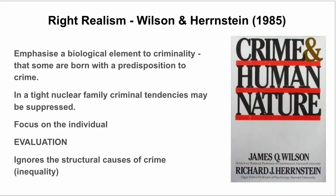The last work is Wilson and Herrnstein's Crime in Human Nature, which is actually quite similar to the Bell Curve in that Herrnstein features again. It focuses on a biological element to criminality — that some people are born with a predisposition to crime, almost going back to Victorian criminology and the idea of the criminal type. They argue that in a tight nuclear family, criminal tendencies might be suppressed, linking to Murray's ideas about single-parent families. A key criticism is that it ignores structural causes of crime: poverty, inequality, and lack of educational opportunity. If you have any questions, please leave a comment below.